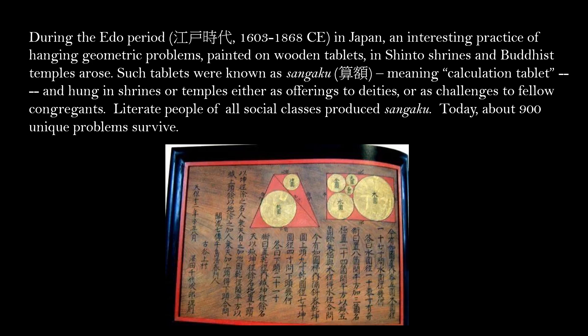First, a little bit of historical background. During the Edo period, which lasted from 1603 to 1868 in Japan, there was an interesting practice of hanging geometric problems painted on wooden tablets in Shinto shrines and Buddhist temples. This was a form of recreational mathematics, and such tablets were known as san-gaku, meaning calculation tablets.